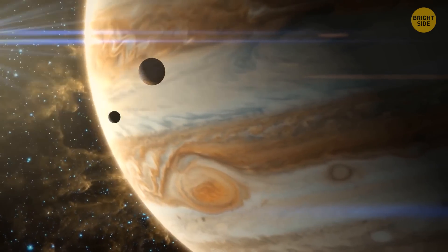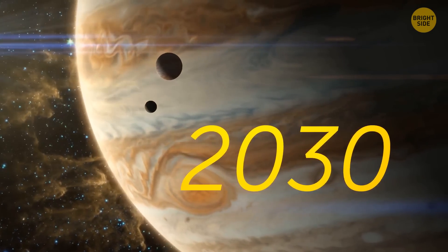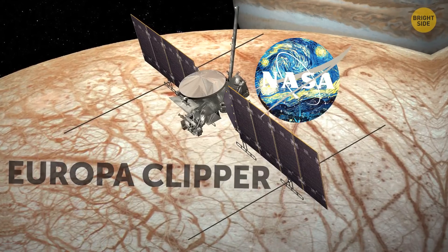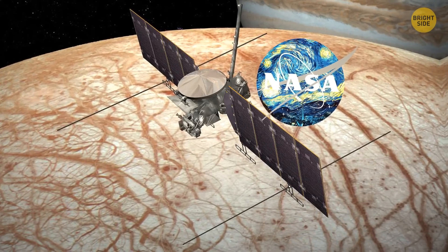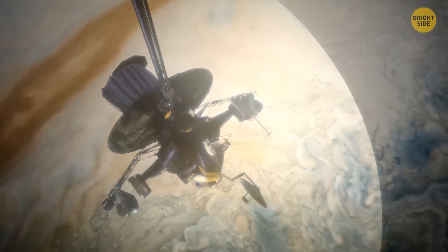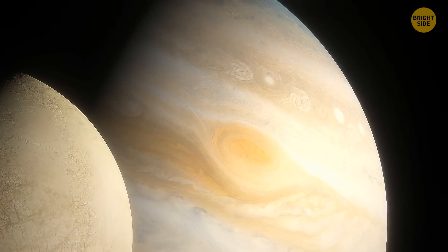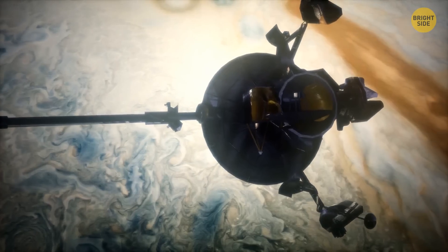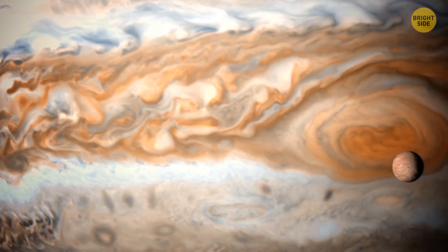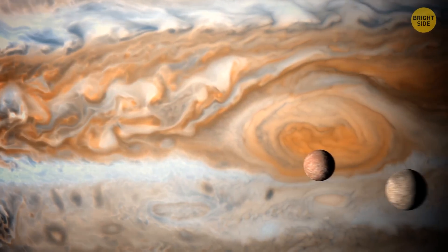Hopefully, we'll find the answers to some of these questions around 2030. That's when a mission called Europa Clipper, which is going to be launched by NASA, will probably reach Europa. The mission is going to have several close flybys and figure out if any form of life can exist on the moon. The European Space Agency's JUICE, which stands for the Jupiter Icy Moons Explorer, is going to visit Europa in the next couple of years too.